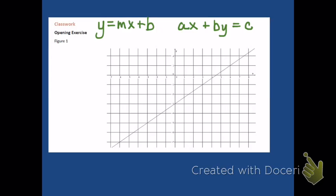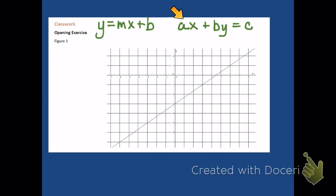At this point we have seen two forms for linear equations. We've seen that we can write them as y is equal to mx plus b, and we call that slope-intercept form, where m is the slope and b is the y-intercept. We've also seen standard form: a times x plus b times y equals c, where a, b, and c are integers. Most people will have found slope-intercept form to be most useful given this line.